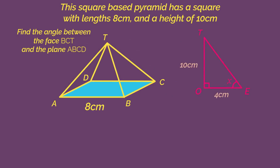Now we have a right angle triangle with a base of 4 because it's half the length of AB and a height of 10.